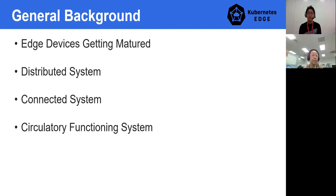As we know, edge devices are getting matured with computation, connectivity, and hardware accelerations. At the same time, edge systems get complicated to support distributed and connected systems. Besides, concerning perception and recognition with dynamic sensing data on the edge, the application should be dynamically adjusted against the environment. The system should be like a circles or factory system to adjust to the dynamic environment.